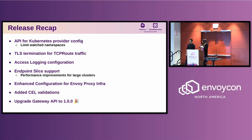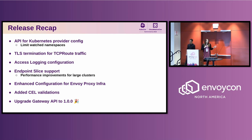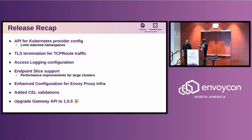We've added support for TLS termination for TCP routes, which was a really important feature for us. We've also done a ton of work in this last release around observability, and access logging is a big part of that. You now have control over exactly what we log, what the format is, and you have all sorts of abilities to push that to different sinks for logs and metrics.